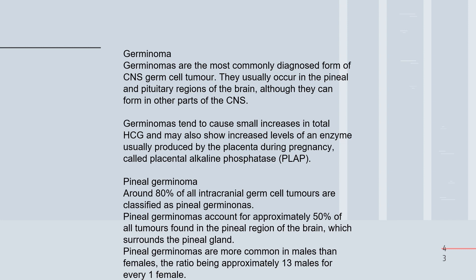To differentiate germ cell tumors, we assess changes in beta-hCG — a component increased in the blood — and placental alkaline phosphatase, which is produced by the placenta during pregnancy. These biomarkers are associated with germ cell tumors occurring in the pineal body and pituitary gland.